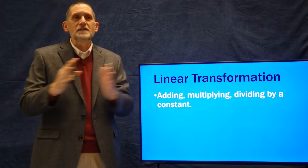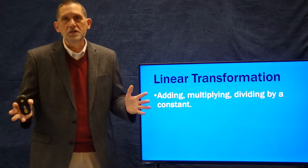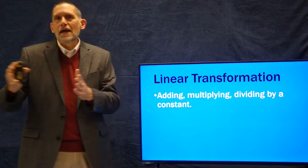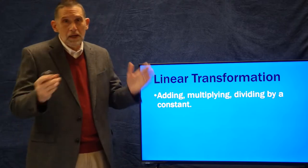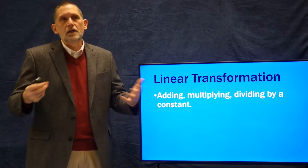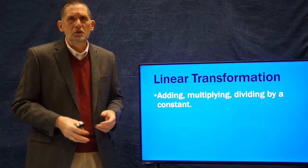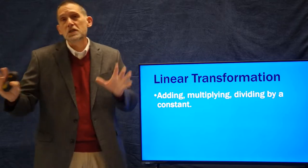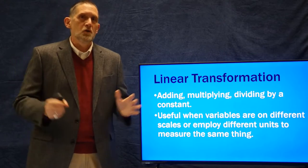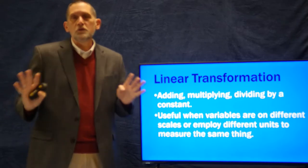If you divide a variable by 10, the mean is divided by 10, but the standard deviation stays the same. What that allows you to do is shift a mean so that it matches some other variable better. That helps you look at comparisons between variables, or look at patterns between several variables — for example, histograms on the same scale. So linear transformations are really helpful when the variables you're interested in are on different scales.